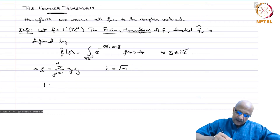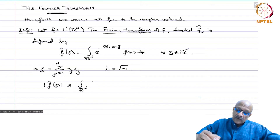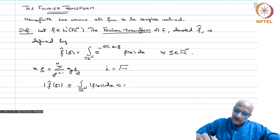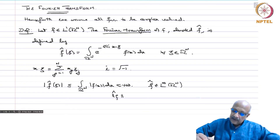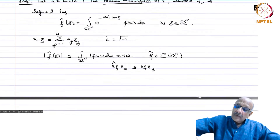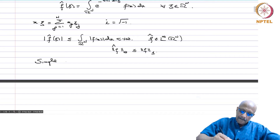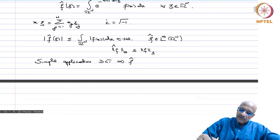To start with, we check that the definition is well-defined. Taking the modulus of f-hat of ξ, this is less than or equal to the integral over Rn of the modulus of f(x) dx, since the exponential has modulus 1. That integral is finite, so the Fourier transform is well defined. In fact, f-hat belongs to L∞ of Rn and the L∞ norm of f-hat is less than or equal to the L1 norm of f. Moreover, by a simple application of the dominated convergence theorem, f-hat is in fact continuous.